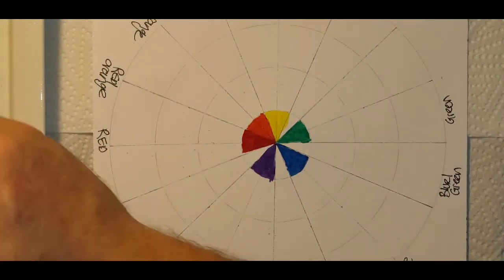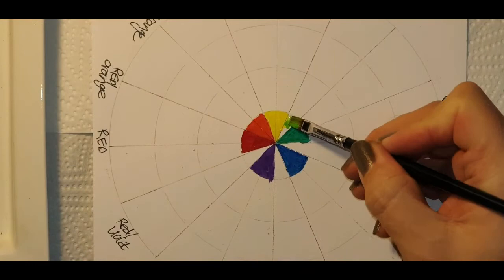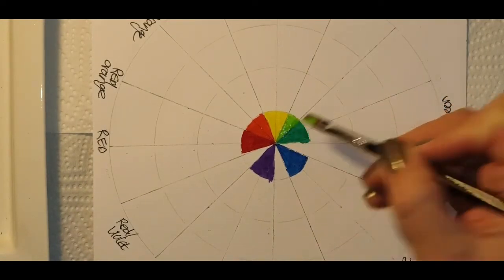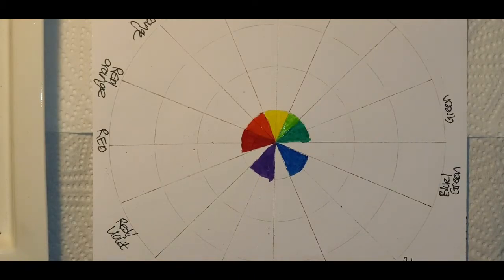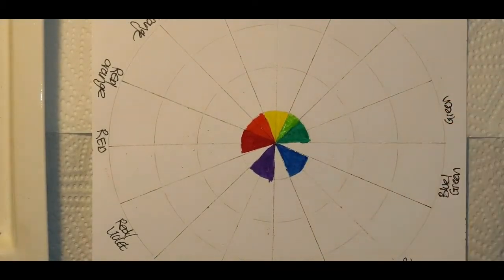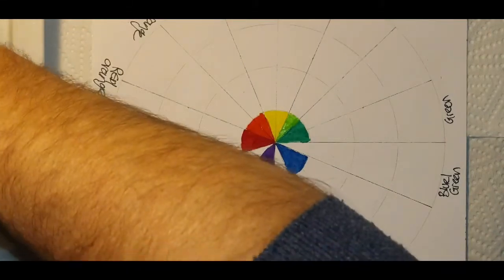Now we're going to create tertiary colors. So if you add yellow to green you get a yellow-green. And if you add blue to green you get a blue-green.